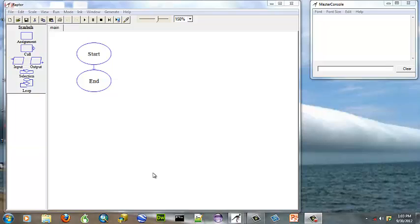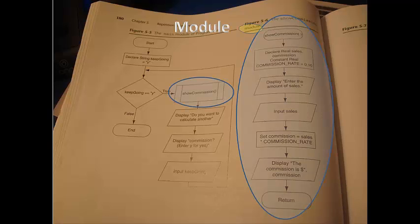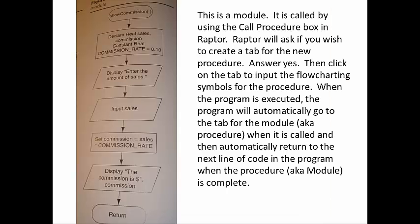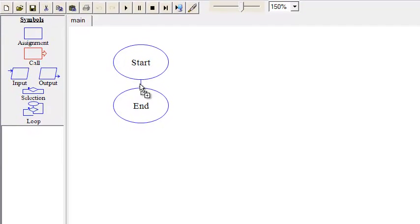This RAPTOR flowchart is on the do-while loop. It's on page 180, and I'm going to pause here and insert a couple of questions. The first thing I'm going to do is go ahead and put the call statement. This is how we call a module.